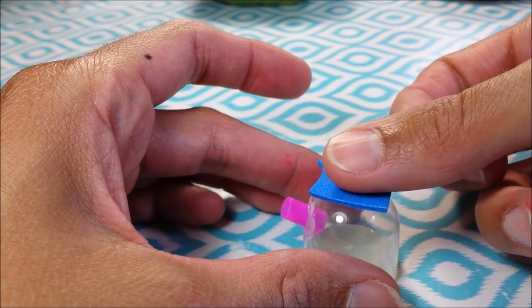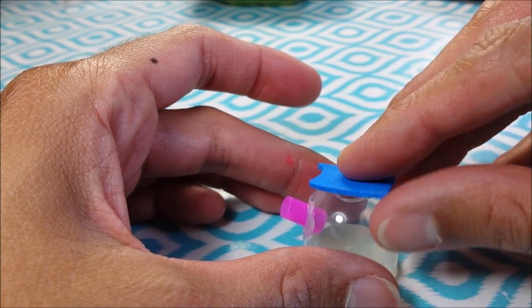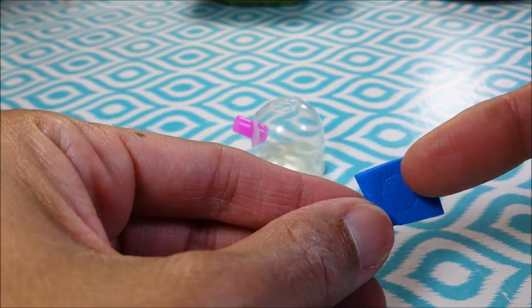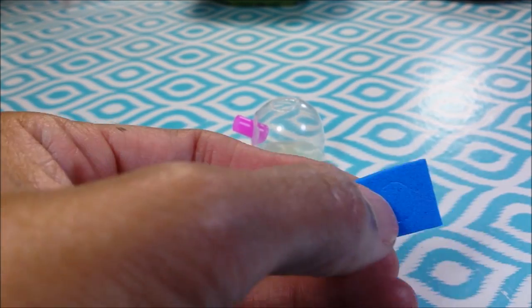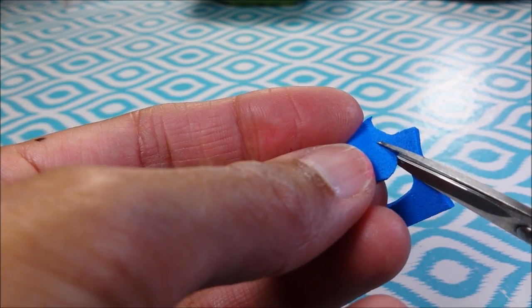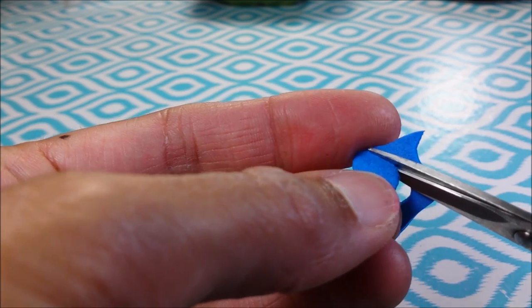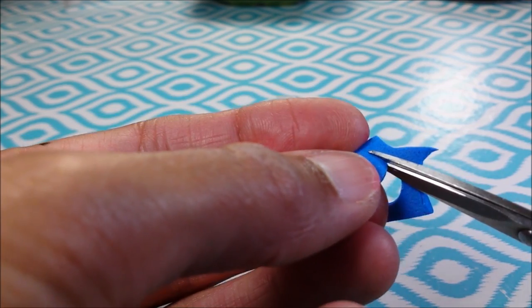Then I take a piece of craft foam paper and cut just smaller than this hole, because we want the craft foam paper to just barely fit inside.